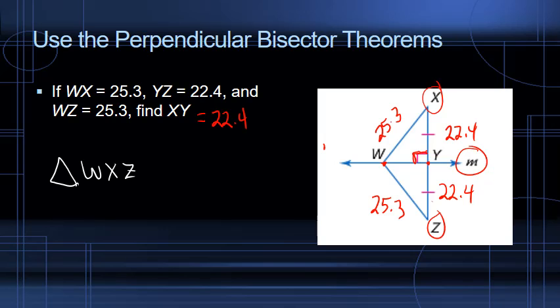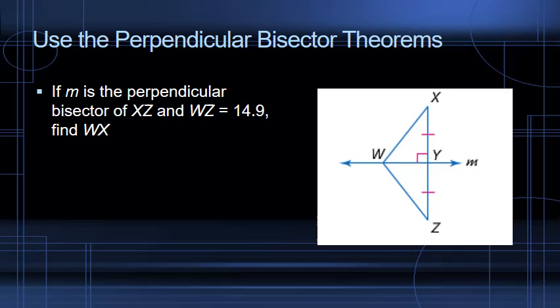Now we're going to look at the same diagram and get some other information from it. This time we're told that if M is a perpendicular bisector to XZ — we know it's a perpendicular bisector because we've got the right angle box, and it's at the midpoint of XZ — we see that XY and ZY are congruent to each other from the diagram.